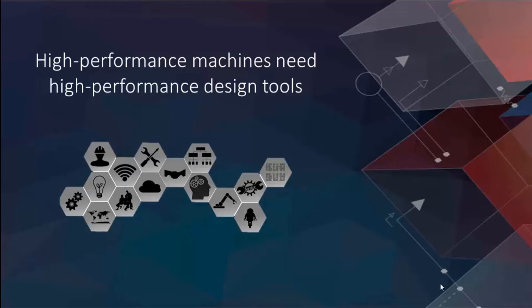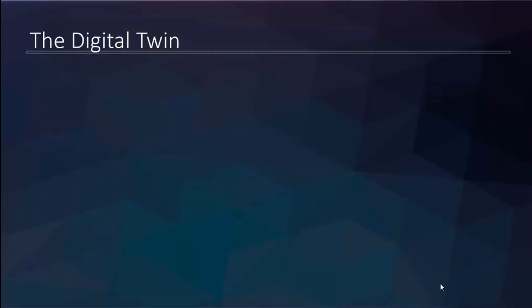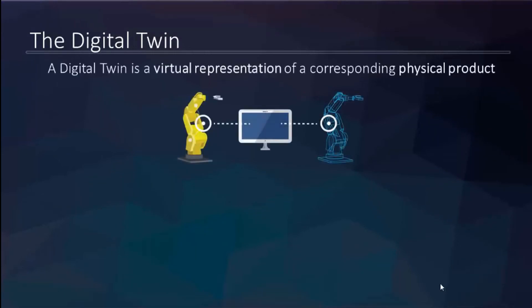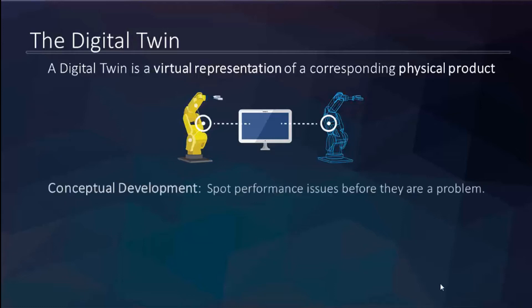There are certain technologies we need to adopt sooner rather than later. What I want to talk about today is what we call the digital twin — really just a virtual representation of a corresponding physical product, a physics-based representation of all the different dynamics and movements happening within a device you're designing. Given that it truly understands how something is going to move and what forces and temperatures will be involved, it's great for conceptual development — spotting system-wide performance issues before you need to build a prototype.